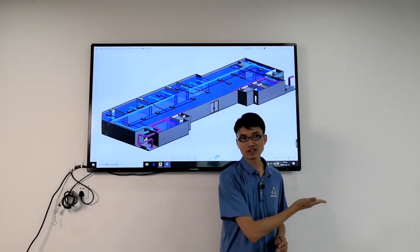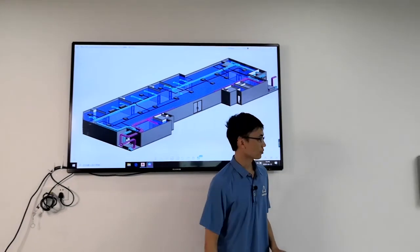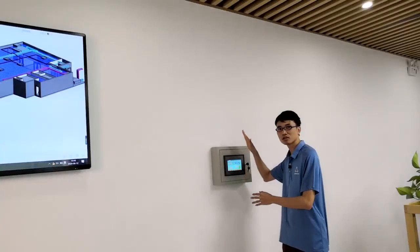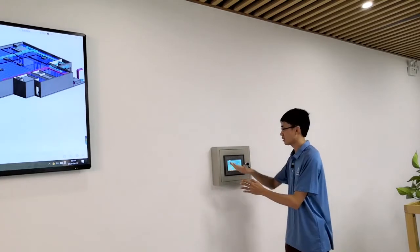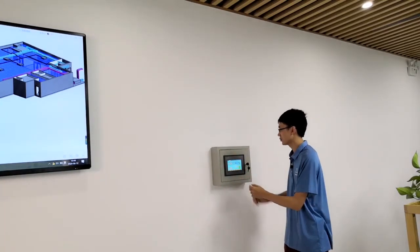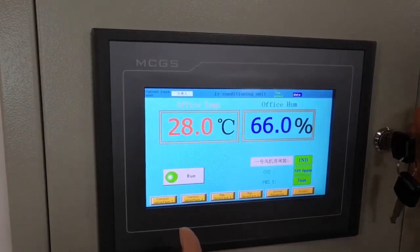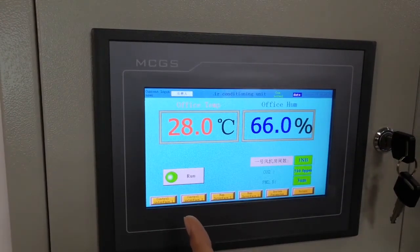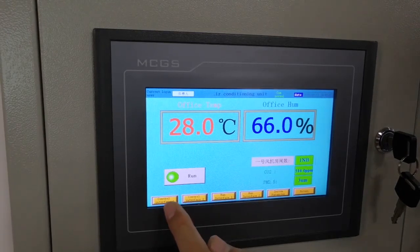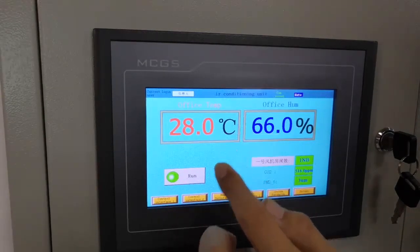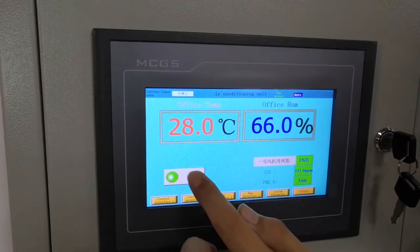Now, let's have a look at the control system. Here is the slim and small control box. You can see a touch screen here. What we need to do is just to turn on the ERV one by one. ERV number one and ERV number two.